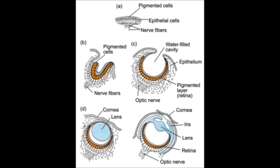At the point where the neural ectoderm meets the surface ectoderm, the latter thickens to form the lens plate, invaginates to form the lens vesicle, and then separates to form the lens.